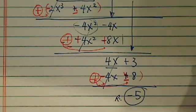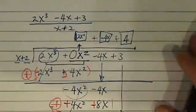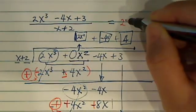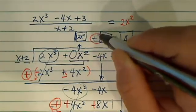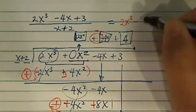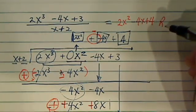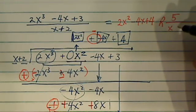So here's the whole answer. This whole thing is equal to, let's put our answer over here, 2x squared, plus minus here gets simplified into a minus 4x plus 4 with a remainder of 5, which how we write it is x plus 2 as a fraction part.